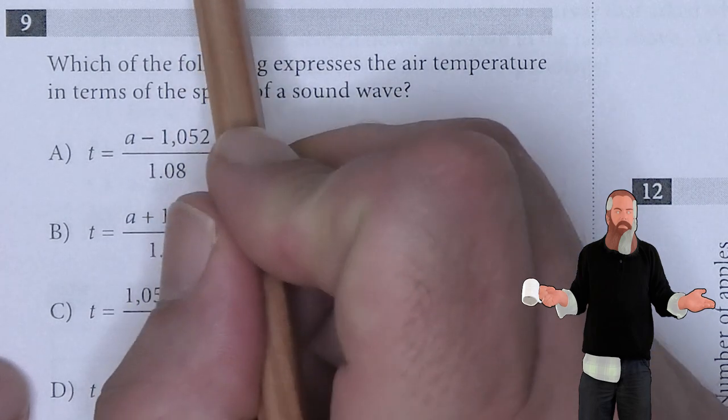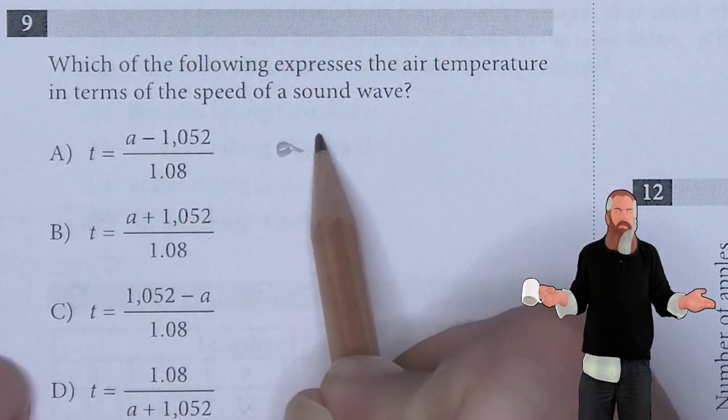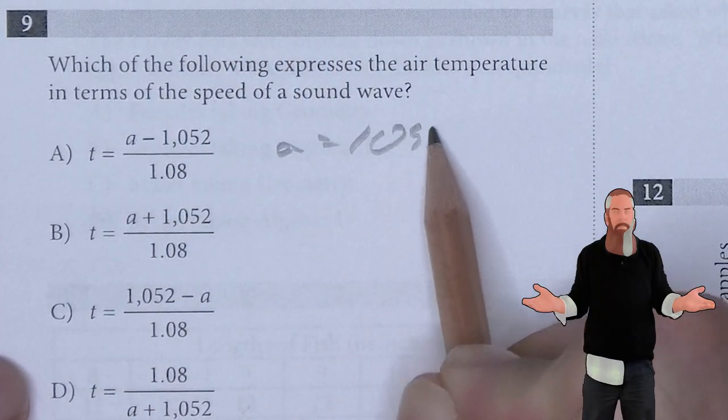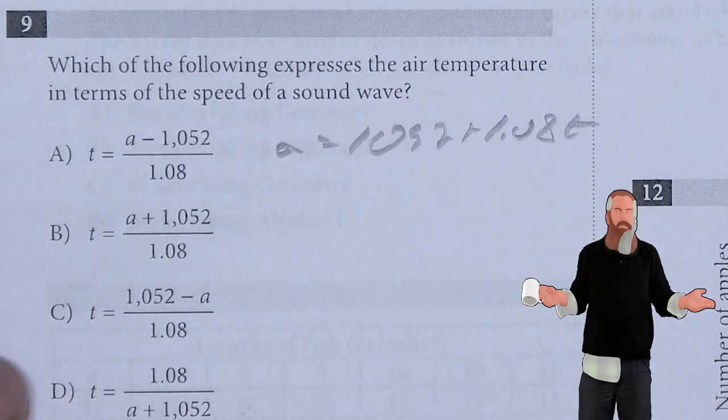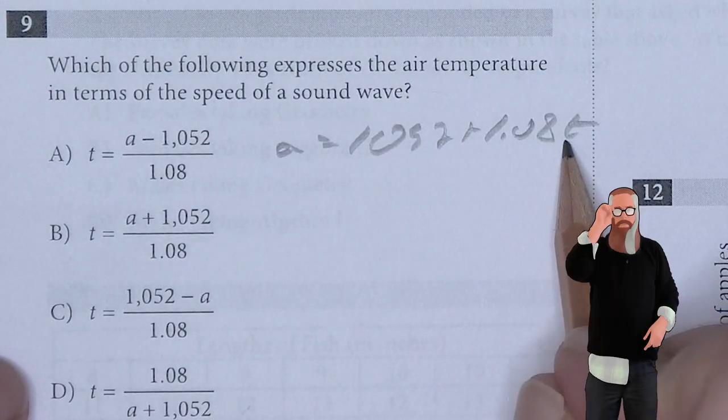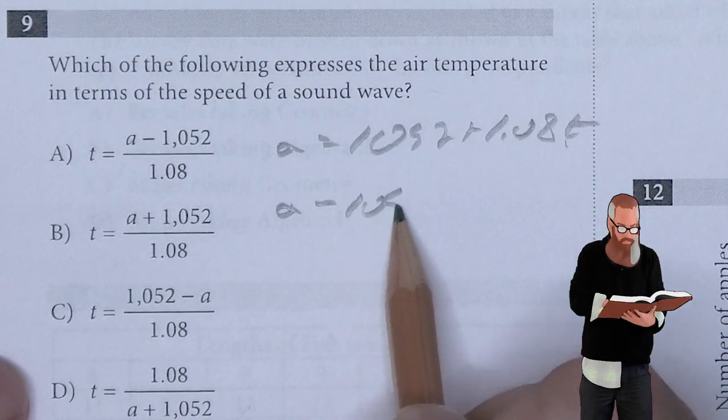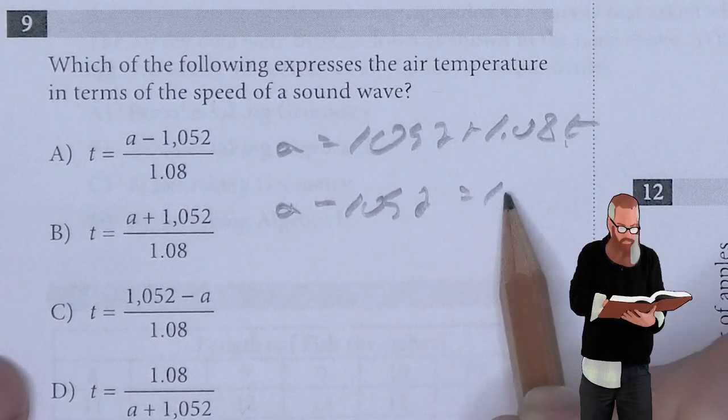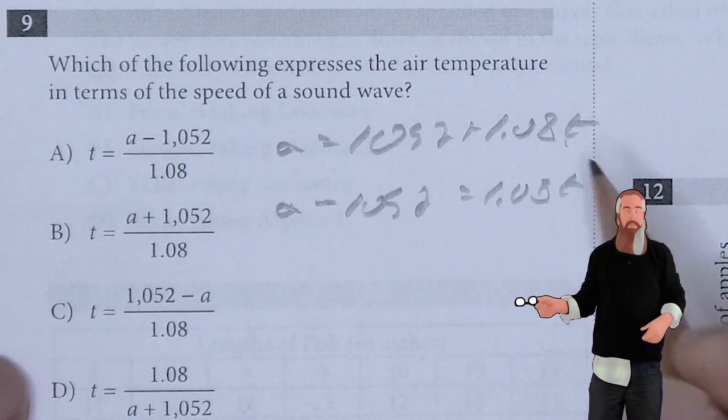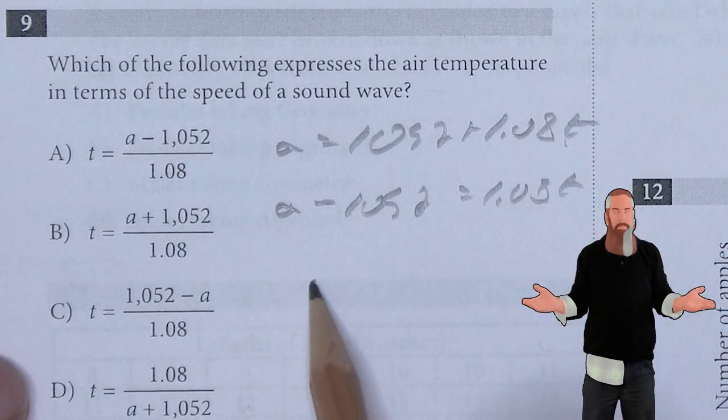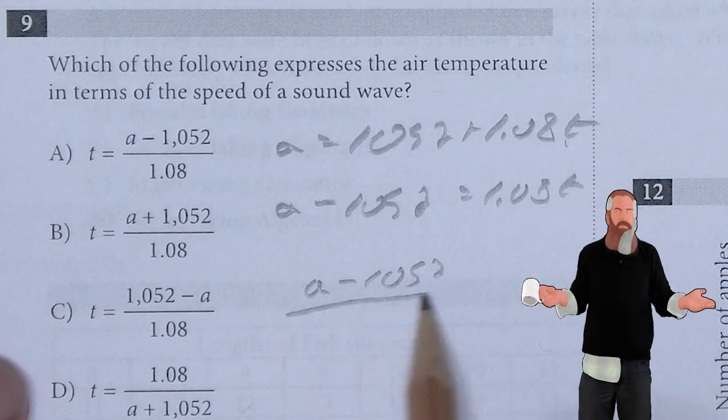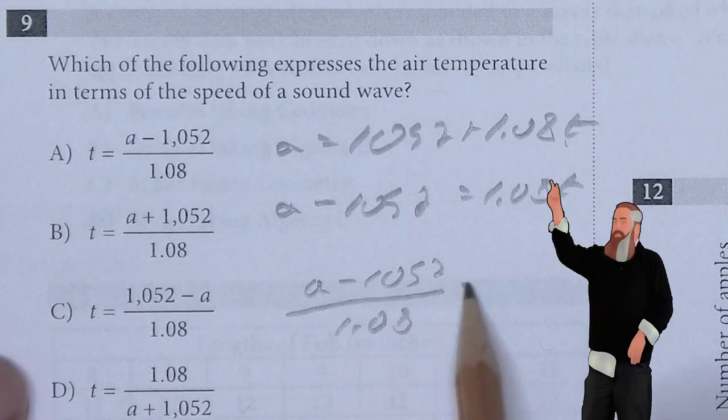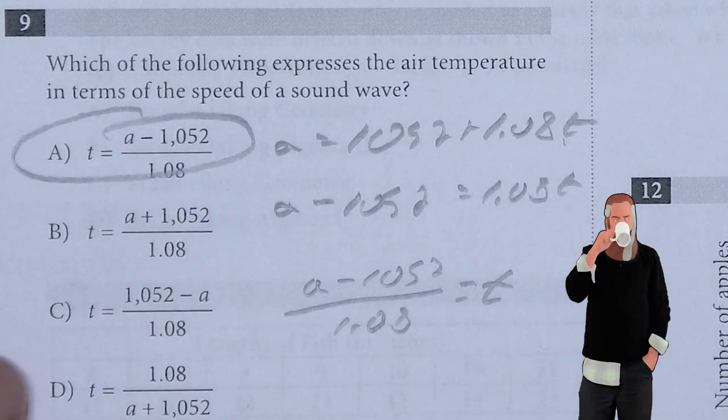Which of the following expresses the air temperature in terms of speed of the sound wave? If I start with a equals 1052 plus 1.08T and solve for T, a minus 1052 is equal to 1.08T. If I divide everything by 1.08, I get a minus 1052 divided by 1.08 is T. A is your answer.